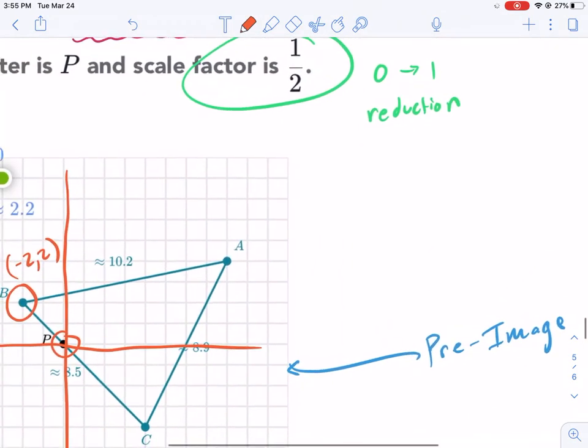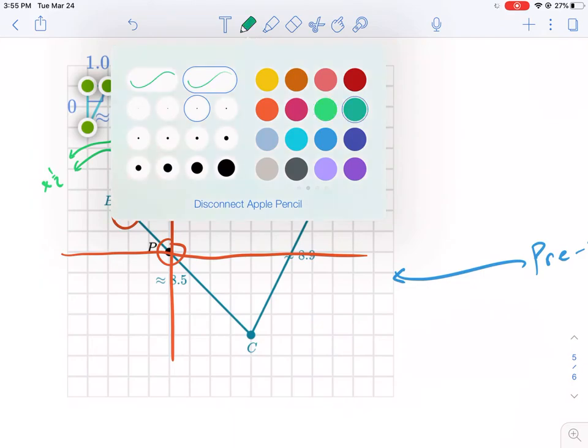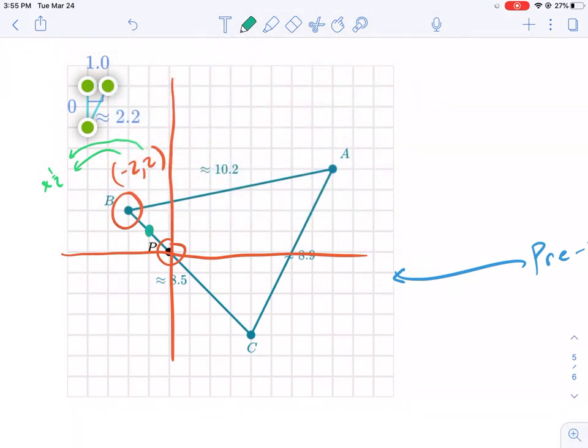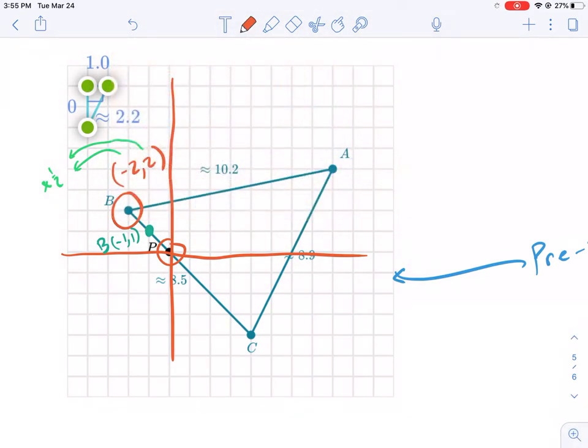And if it has a scale factor of one half, a reduction, that means we're going to take both these coordinates and multiply negative two times one half and two times one half. That would give us negative one comma one for our new point for B. That's one way to do this problem.